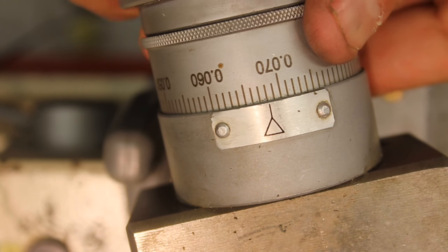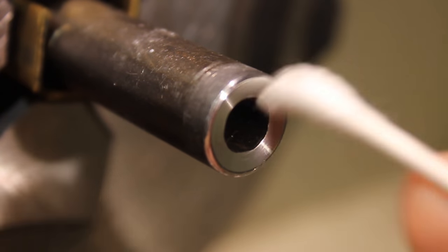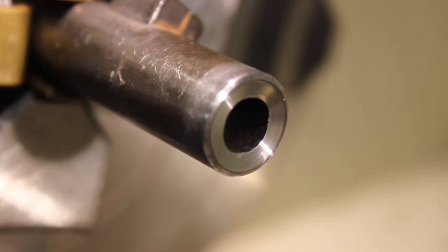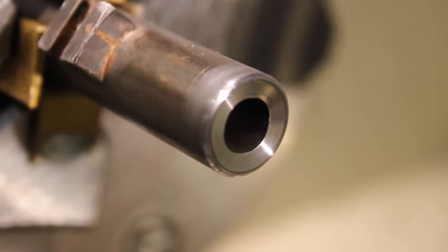Once the crown has been cut, a q-tip can be used to identify any burrs on the inside of the bore. If any cotton is pulled from the q-tip, a burr is there and the crown will need to be re-cut.